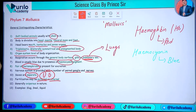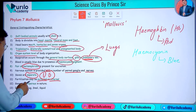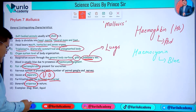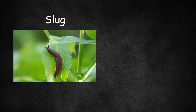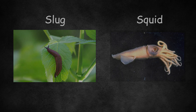Sexes are separate — they are unisexual or dioecious. Fertilization may be external or internal. Generally, they are oviparous.